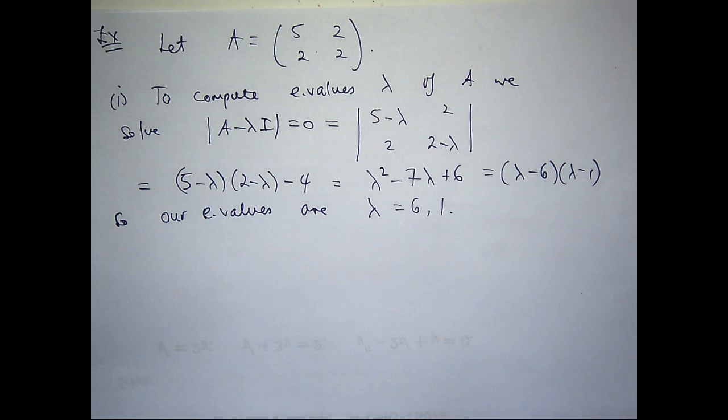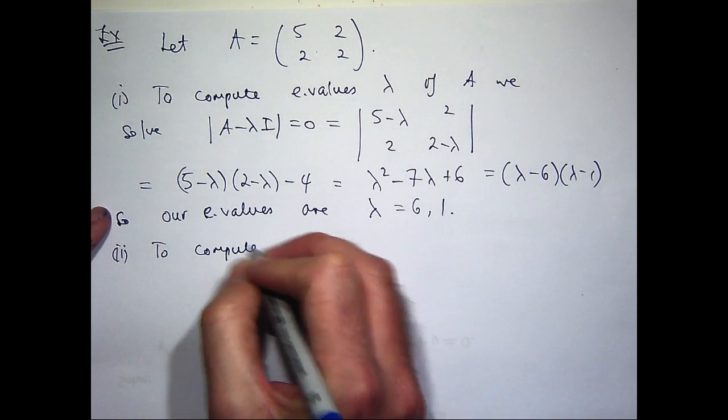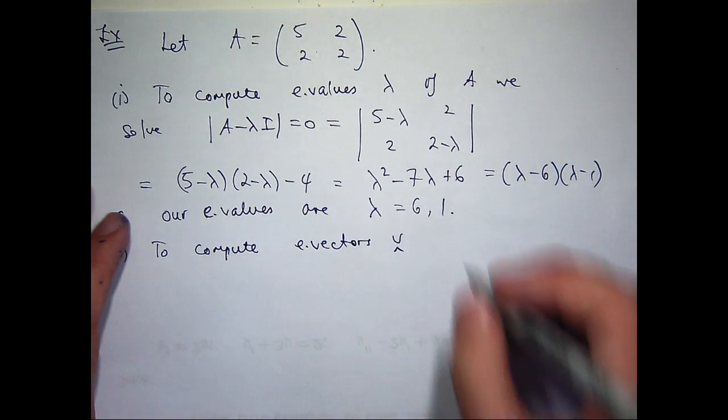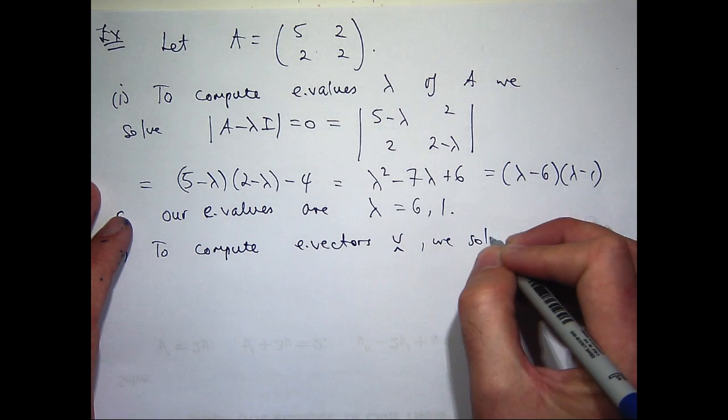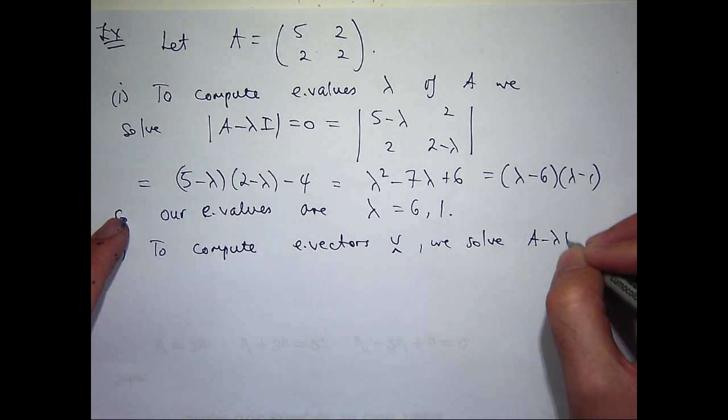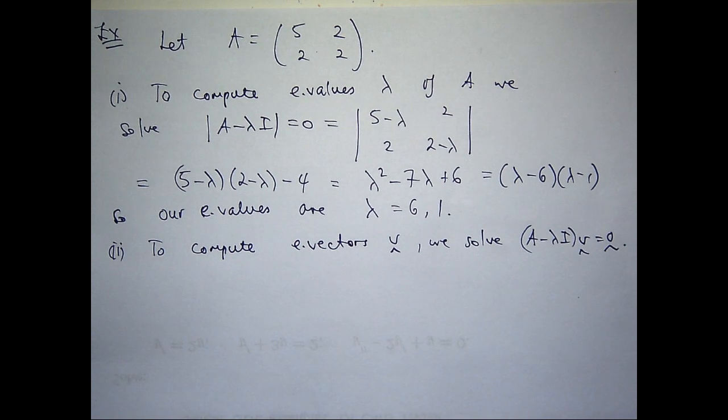Now, the next part of this example is going to compute the corresponding eigenvectors. So we're going to compute some vectors from the following system of equations. So we want to look for a vector v that satisfies that bottom right hand corner. So essentially we consider the eigenvalues separately and then compute the corresponding eigenvectors.